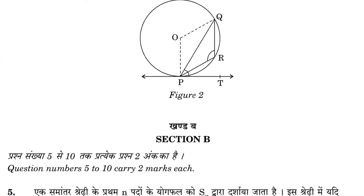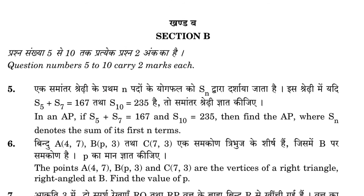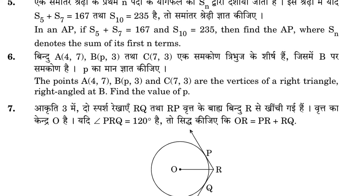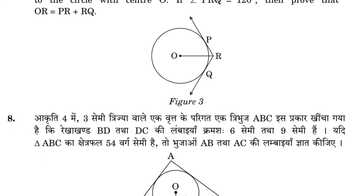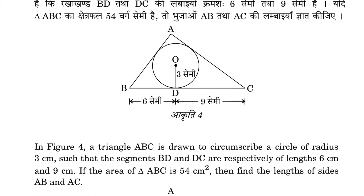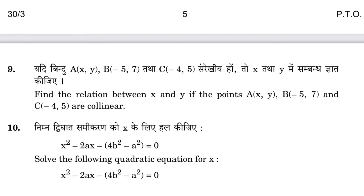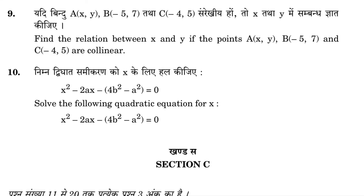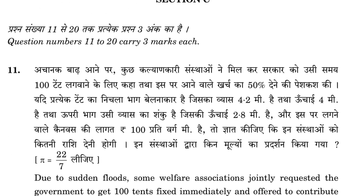In Section B, two marks each, there are six questions. Question 5 is on AP, question 6 is on coordinate geometry, question 7 is on tangents, question 8 is again on tangents, question 9 is on coordinate geometry, and question 10 is on quadratic equations.